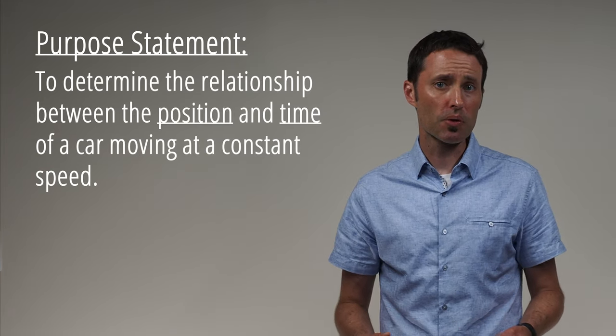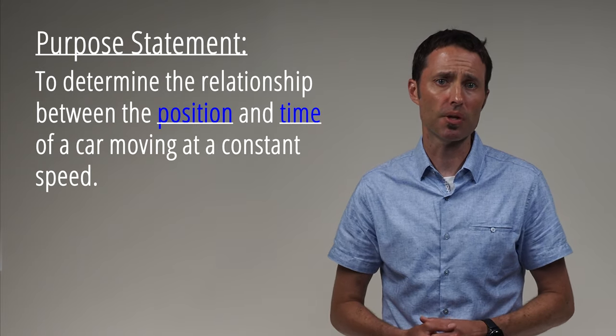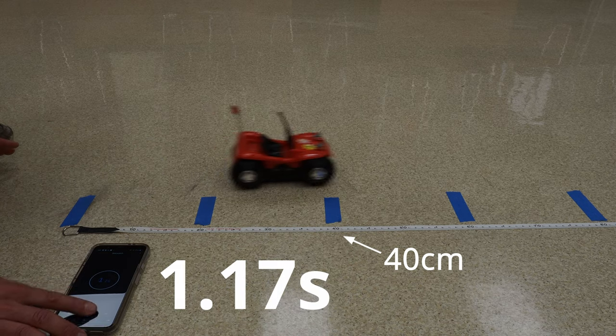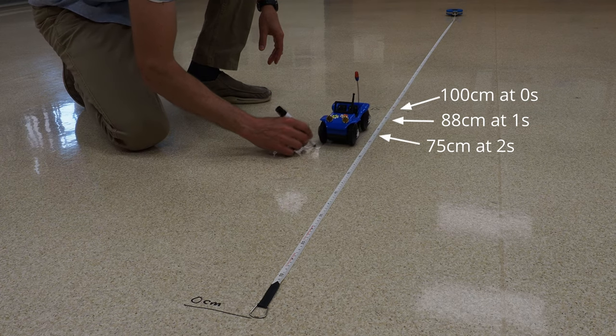With this in mind, our purpose statement should now read to determine the relationship between the position and time of a car moving at a constant speed. By the end of the class discussion about how the data will be collected, the students should agree on a method which either measures the time it takes to reach certain specific positions, or the position of the car at specific times.